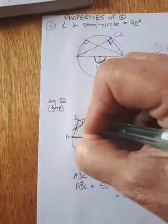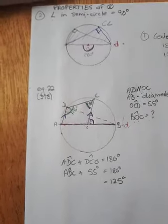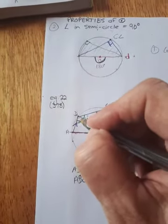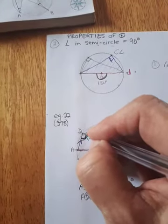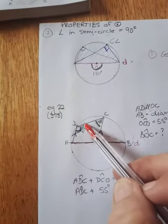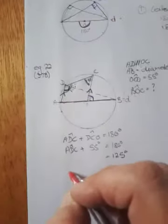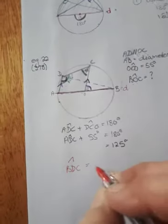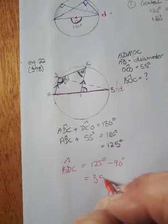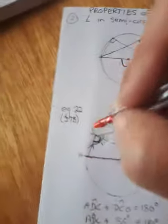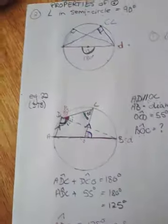This green angle is 125 degrees. We also know this is a 90-degree angle, so we can calculate the remainder. That's 125 minus 90. That gives me angle BDC. Angle BDC equals 125 degrees minus 90 degrees, which gives 35 degrees. Let me mark that in red — 35 degrees.